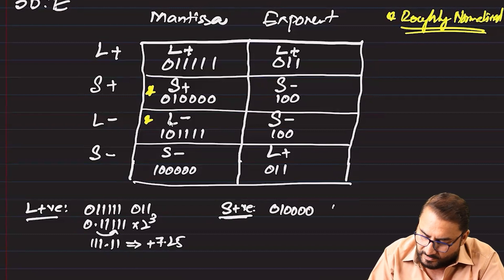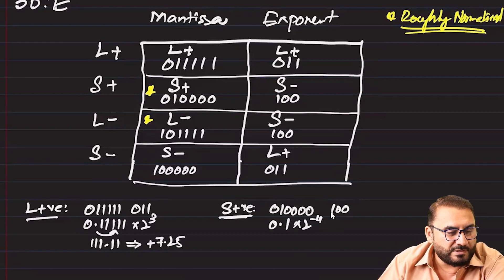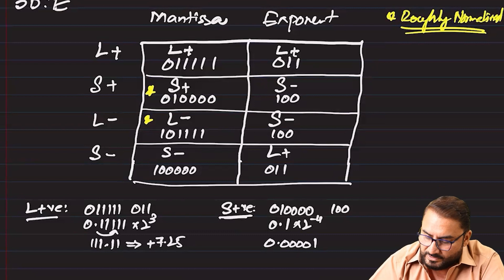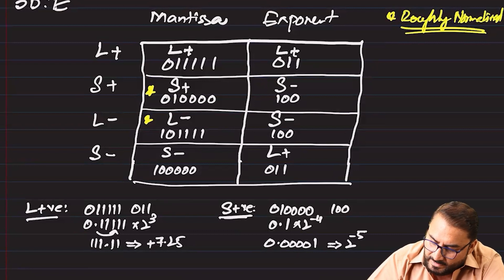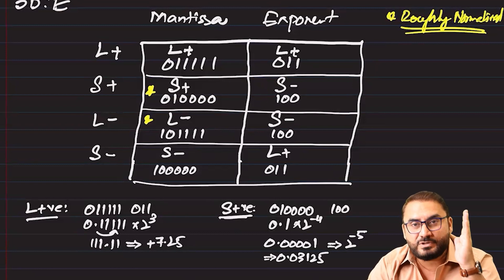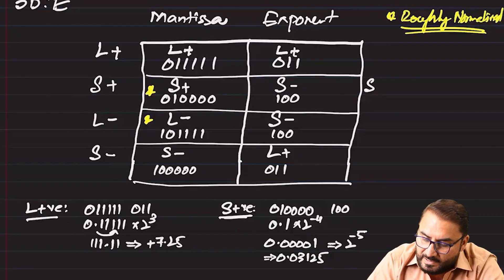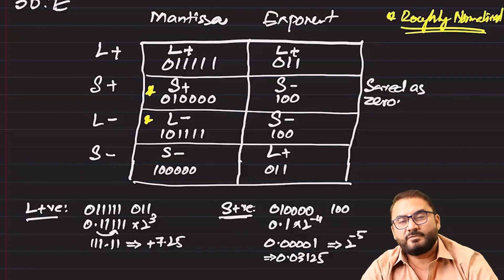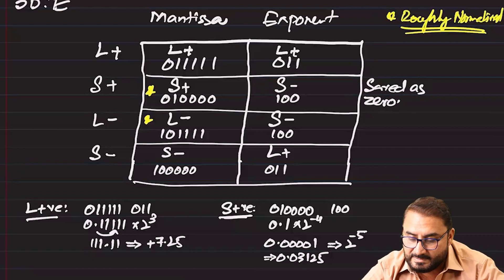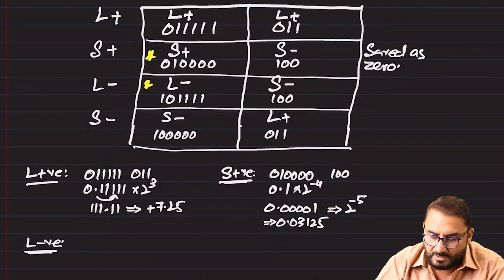For the smallest positive number: 0.100000 × 2^(−4) — remember in two's complement, 100 is −4. This means the point moves four places to the left, giving 0.0000 1, which is 2^(−5) = 0.03125. This is the smallest positive number. An important point: instead of saving zero in floating point, the smallest positive number is saved as zero.